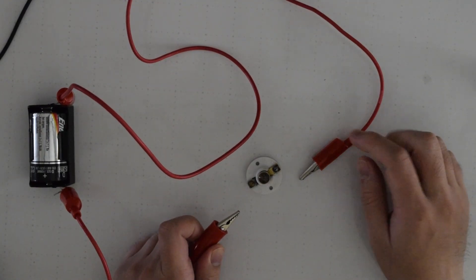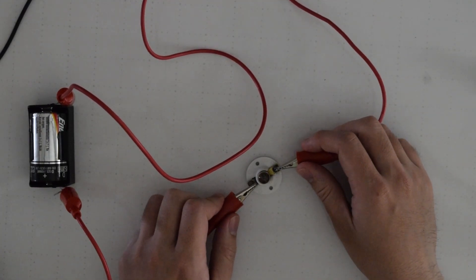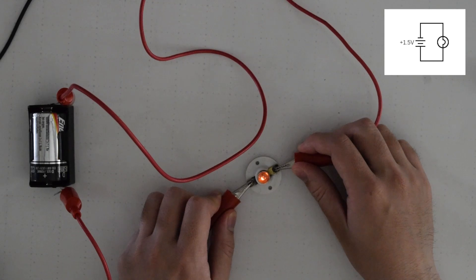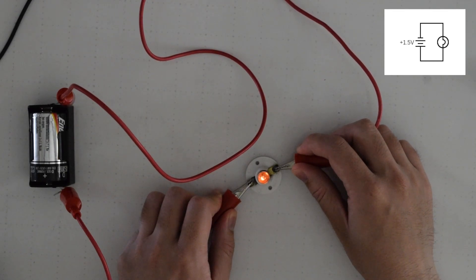So to start off we have one single 1.5 volt D cell battery and I'm just going to attach it directly to my light bulb and we get a bit of a dim glow here. It's not too bright.